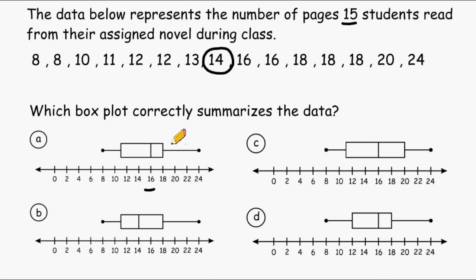However, we are trying to find a box plot with a median value of 14. So we can eliminate choice A as a possibility.